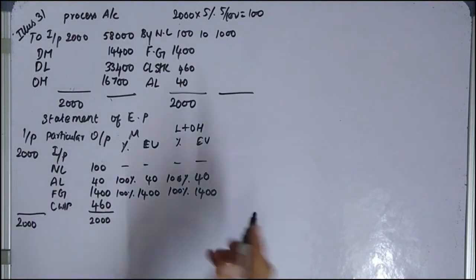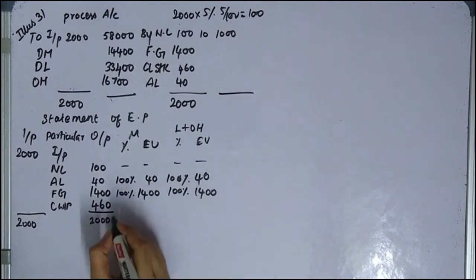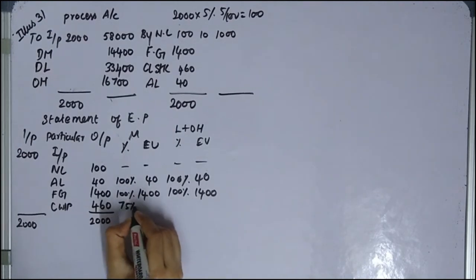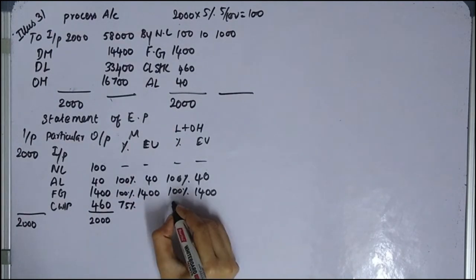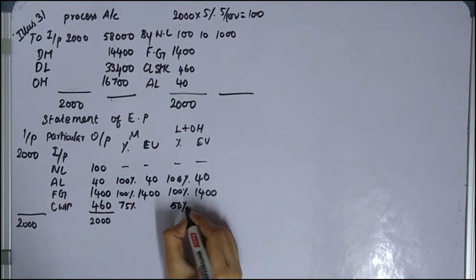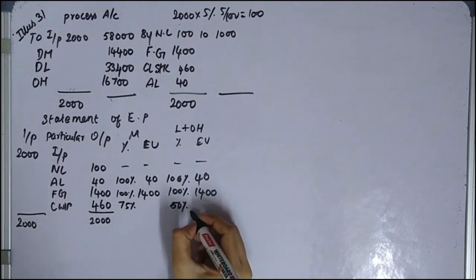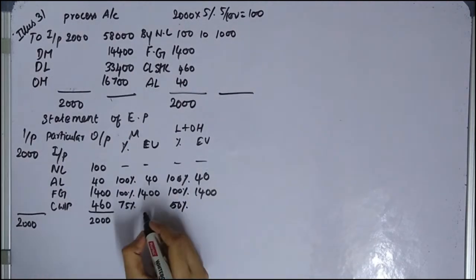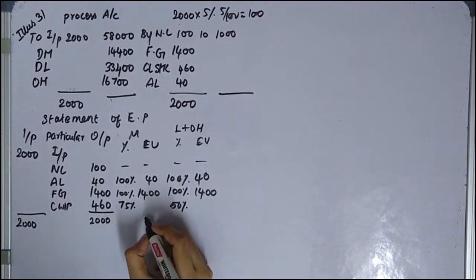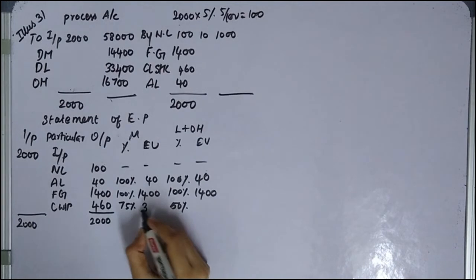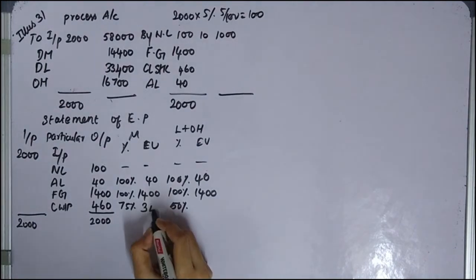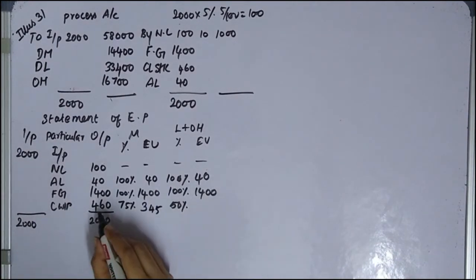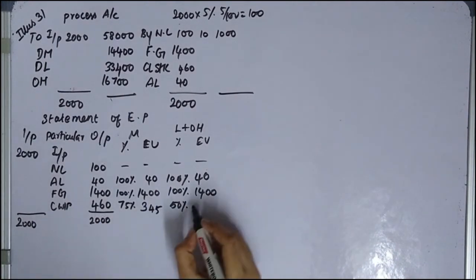Closing stock is 75% for material and 50% for labor and overheads. So in 460 units, 75% gives us 345 equivalent units for material.